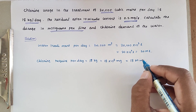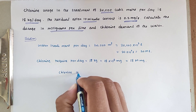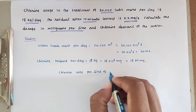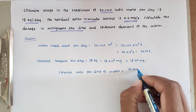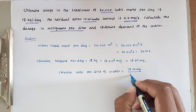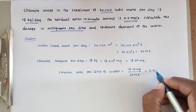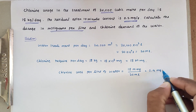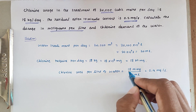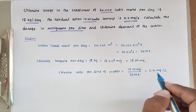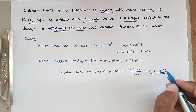Now we can calculate the chlorine used per liter of water. We take 18 million milligrams divided by 20 million liters, which gives us a value of 0.9 milligram per liter. So 20 million liters of water is treated by 18 million milligrams of chlorine, meaning 0.9 milligram per liter is required.